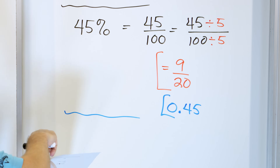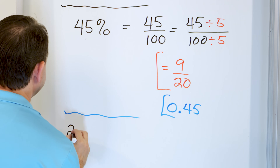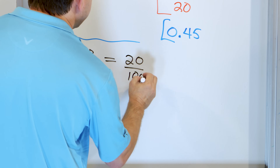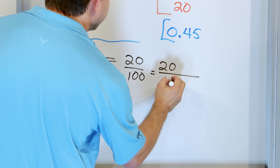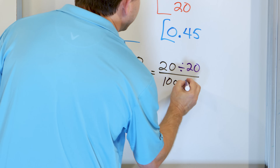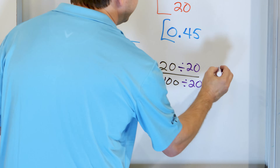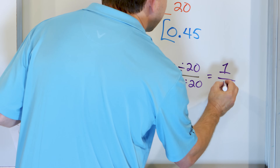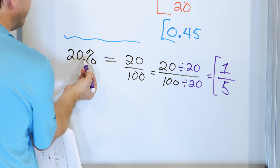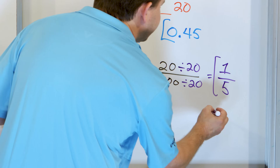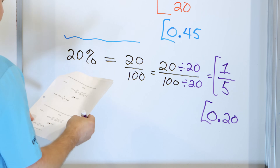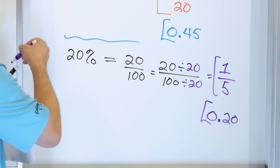Let's take a look at 20%. To convert to a fraction: 20 over 100. I can divide by 20: 20 divided by 20 is 1, and 100 divided by 20 is 5, so the fraction 1/5 is the same as 20%. To get the decimal, there's an invisible decimal at the end of 20; move it two spots to the left: 0.2. You can also write it as 0.20 — the trailing zero doesn't change anything. So 0.20 and 1/5 are the same thing.